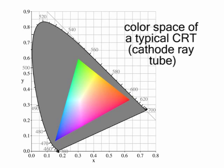For example, let's take a look at this graph. The area shaded in gray represents the range of colors that can be distinguished by the normal human eye. The triangle inside this area represents the colors that can be produced by the red, green, and blue lights of a typical CRT, or cathode ray tube, like the ones used by television sets and computer monitors at the turn of the 21st century.